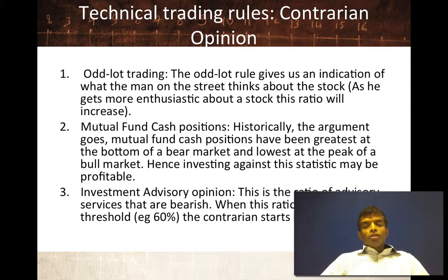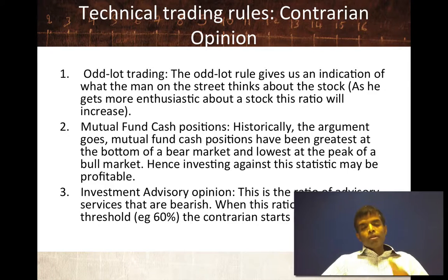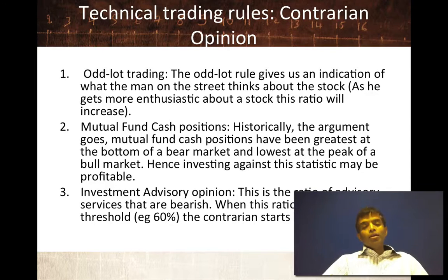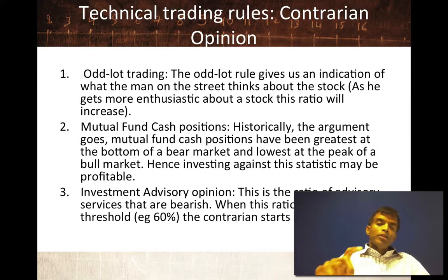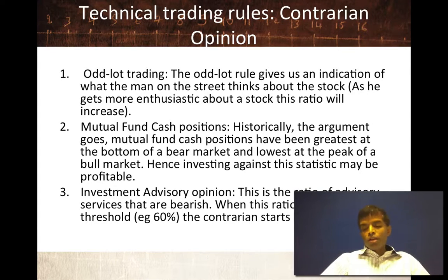There are investment advisors who put out newsletters, and there are surveys that look at the bullish and bearish proportions among investment advisors. Here's the rule: you look at the percentage of investment advisors who are bullish. If that number is really high, you sell stocks — because if most investors are bullish and you assume investors overreact, then they're being bullish for the wrong reasons. You sell when they're buying and buy when they're selling. In all three contrarian indicators, you're trying to get a stand-in for the typical investor and go against them.